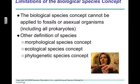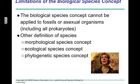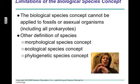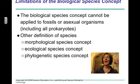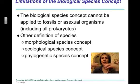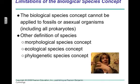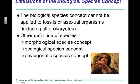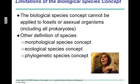This idea of the biological species concept — that organisms are in the same species if they can reproduce and produce a viable fertile offspring — obviously can't be applied to fossils, and it can't be applied to asexual organisms, including all bacteria. So we do have other definitions of species: the morphological species concept, where we describe their morphology; the ecological species concept, where we describe what niche or role an organism plays in a habitat; and the phylogenetic concept, where we look at evolutionary relationships between different species.